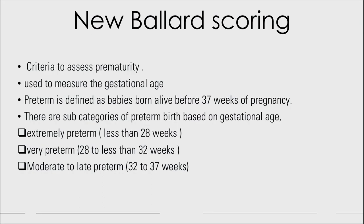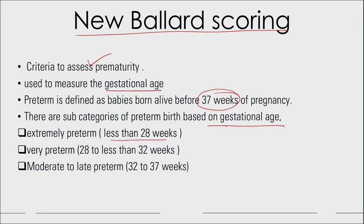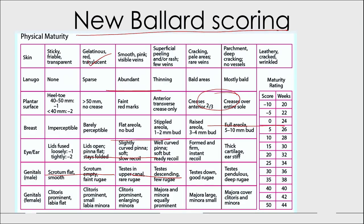The New Ballard Score is the criteria used to assess prematurity and measure gestational age. Preterm is defined as babies born alive before 37 weeks. Subcategories include: extremely preterm (less than 28 weeks), very preterm (28 to 32 weeks), and moderate to late preterm (32 to 37 weeks). The physical maturity parameters are scored and a maturity rating is calculated to determine gestational age in weeks.